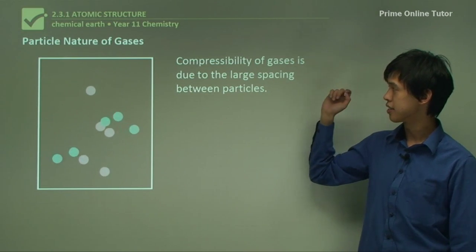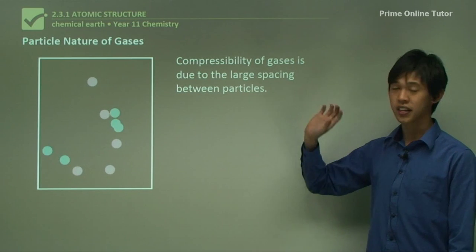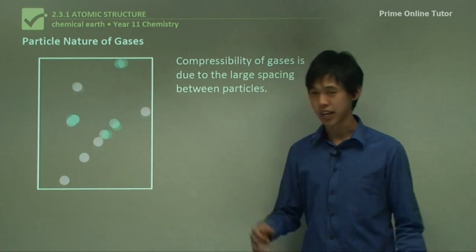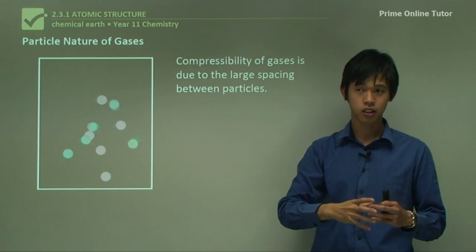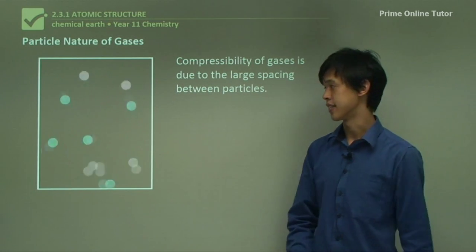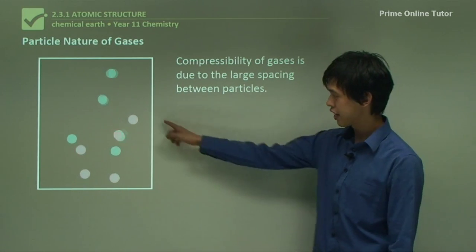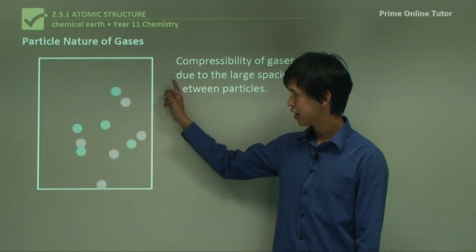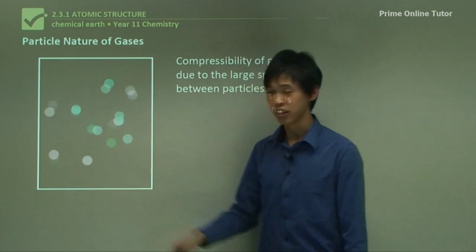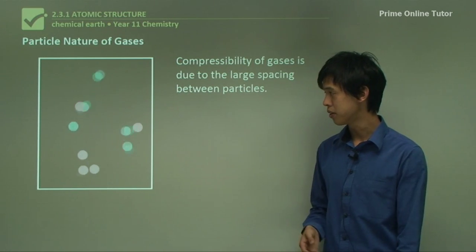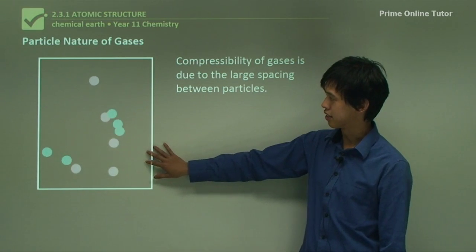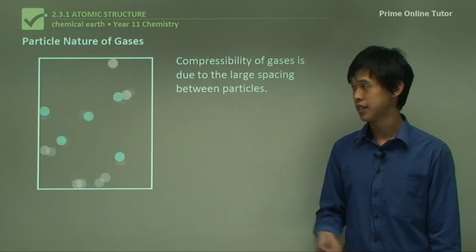The compressibility of gases is simply because of the huge space between the particles — there's lots of space between each particle. If we squash the volume down, the particles can still exist but just have less space to move around, so we can compress the gas. In the animation, particles travel in random directions until they hit each other and also bounce off the wall. The number of times they hit the wall is related to the pressure in that system — more hits means more pressure, fewer hits means less pressure.